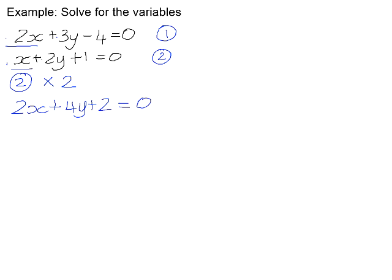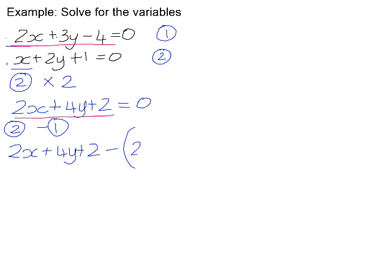So now, if we now take equation 2 and we subtract equation 1, we will have 2x plus 4y plus 2, that's the left-hand side of this equation, and we need to minus the left-hand side of equation 1. So we will minus, we need to minus the whole of the left-hand side of equation 1, so it's important to put it into a bracket. And then, on the right-hand side, we will just have 0 subtract 0, which remains 0.